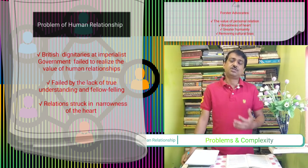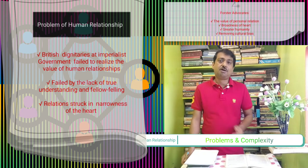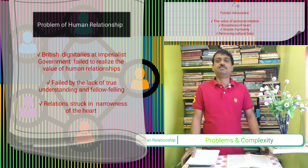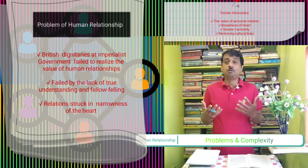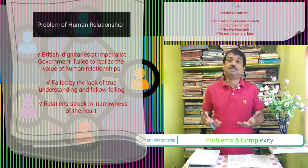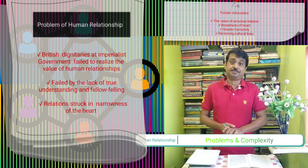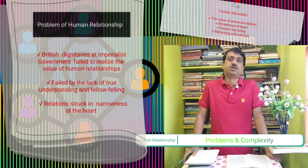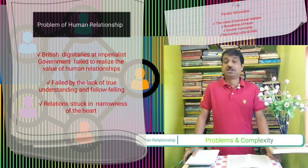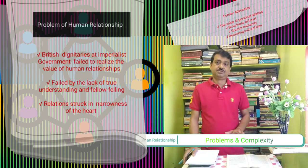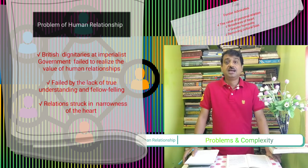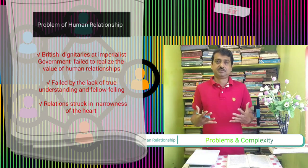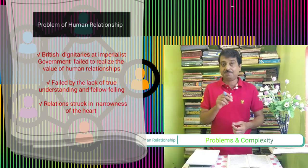From a British perspective, one should understand the greatness of India. Forster wholeheartedly believed in the value of personal relationship and the holiness of the heart's affection. He did not subscribe to the view that the world is a globe of people trying to reach one another through culture and intelligence alone. According to Forster, all attempts at building personal relationships during British rule were failed by the lack of true understanding and feeling. The narrowness of the heart is the very problem in the British Raj.